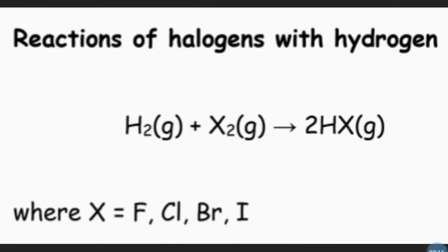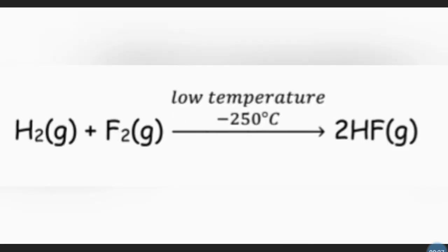This is the general equation for halogens reacting with hydrogen, where X represents fluorine, chlorine, bromine, and iodine. Fluorine combines explosively with hydrogen, even in the cold and dark, to give hydrogen fluoride gas.